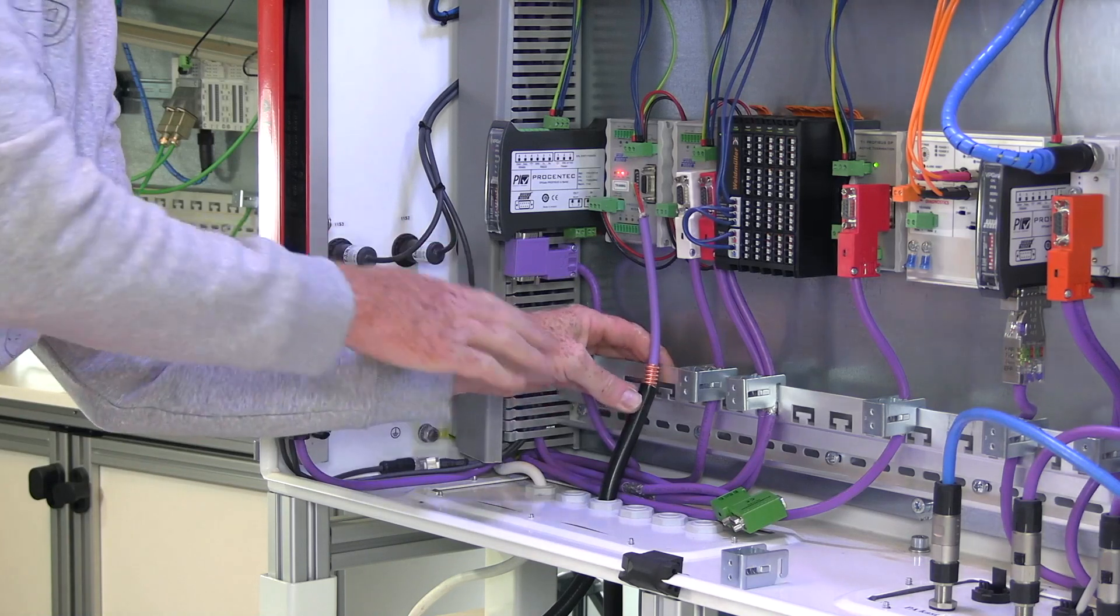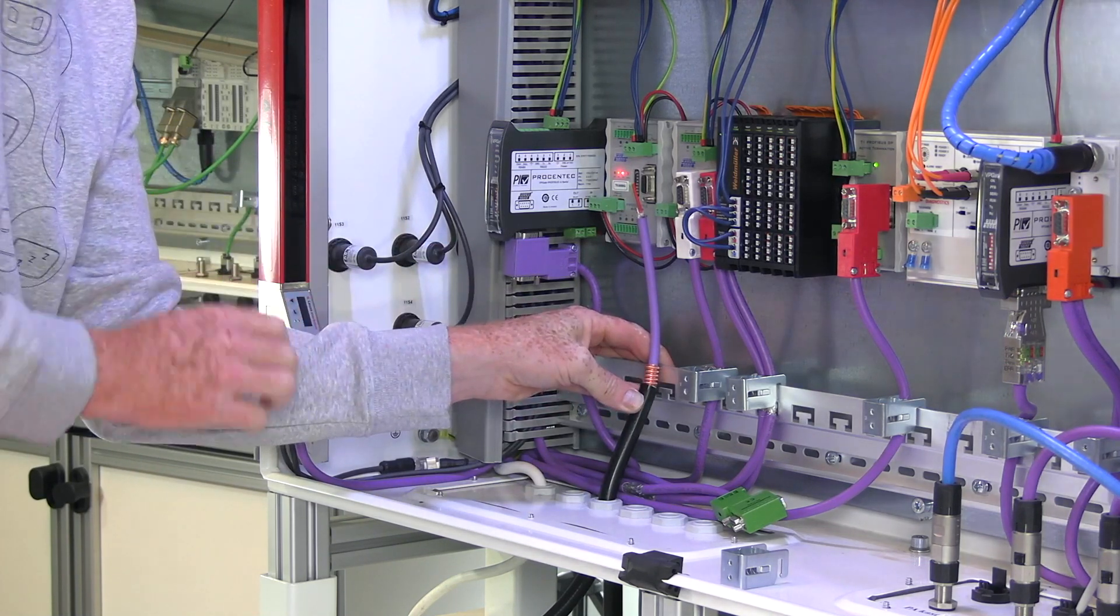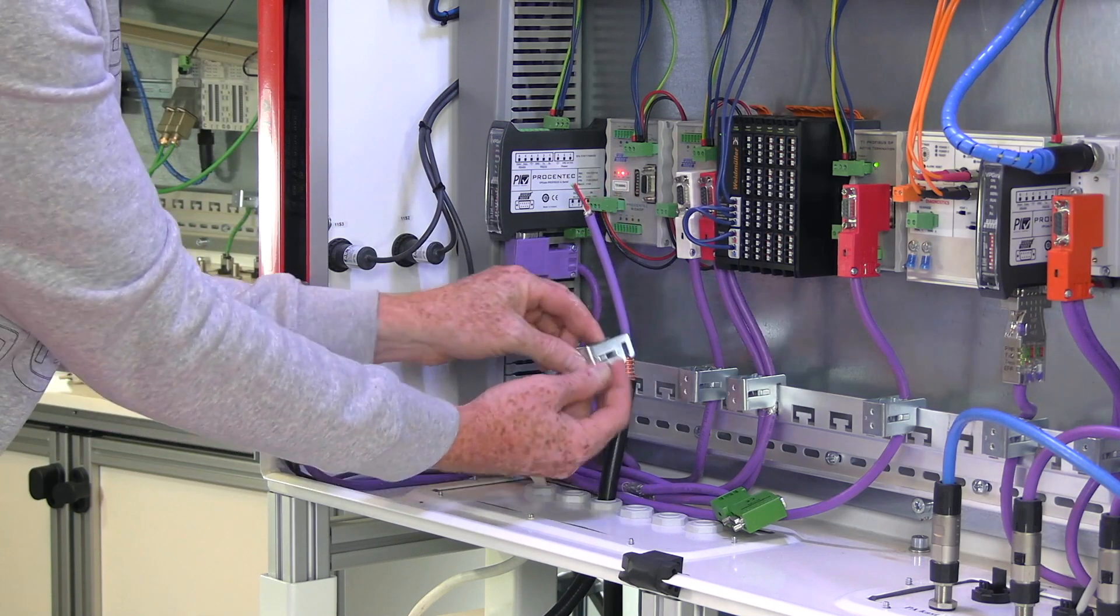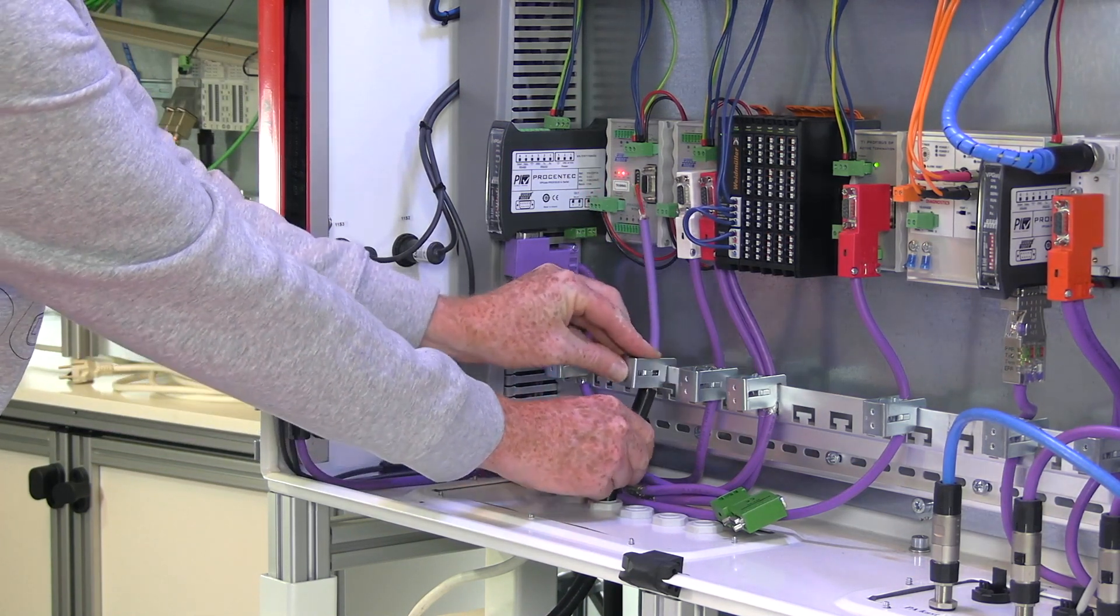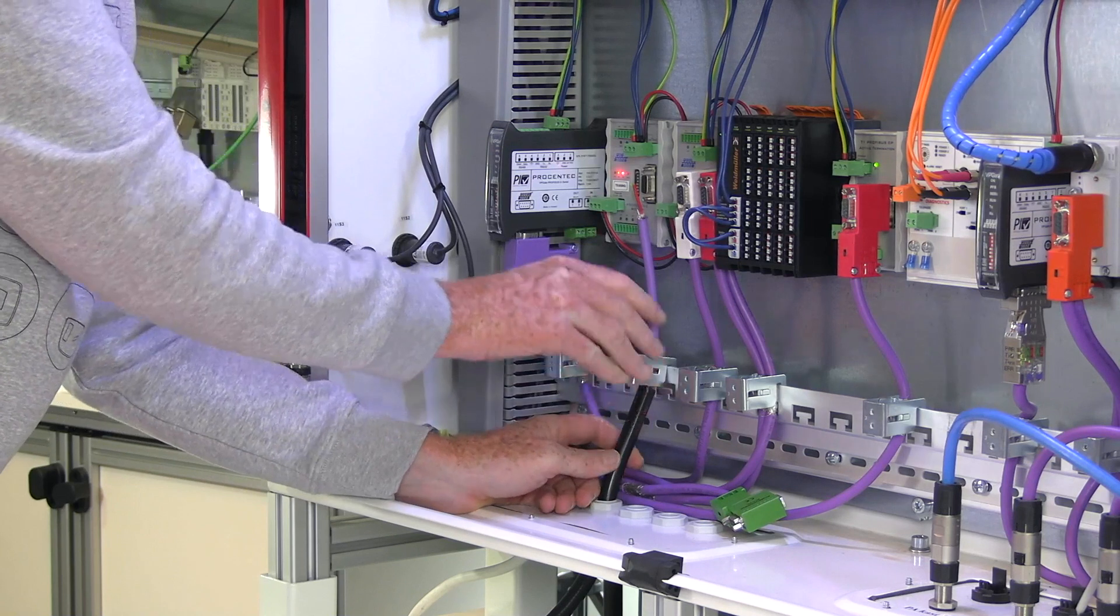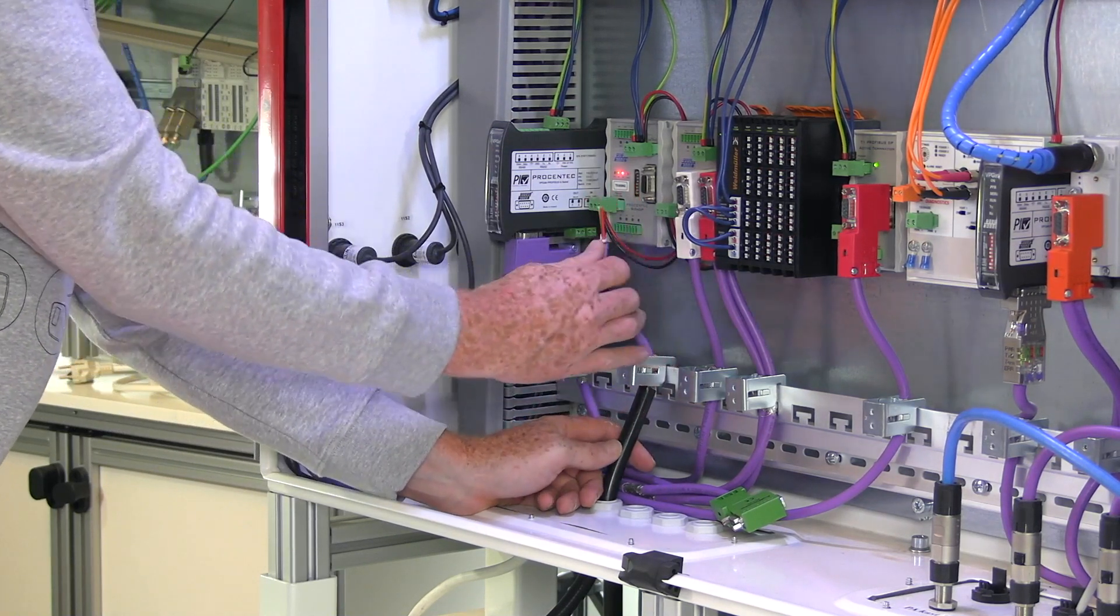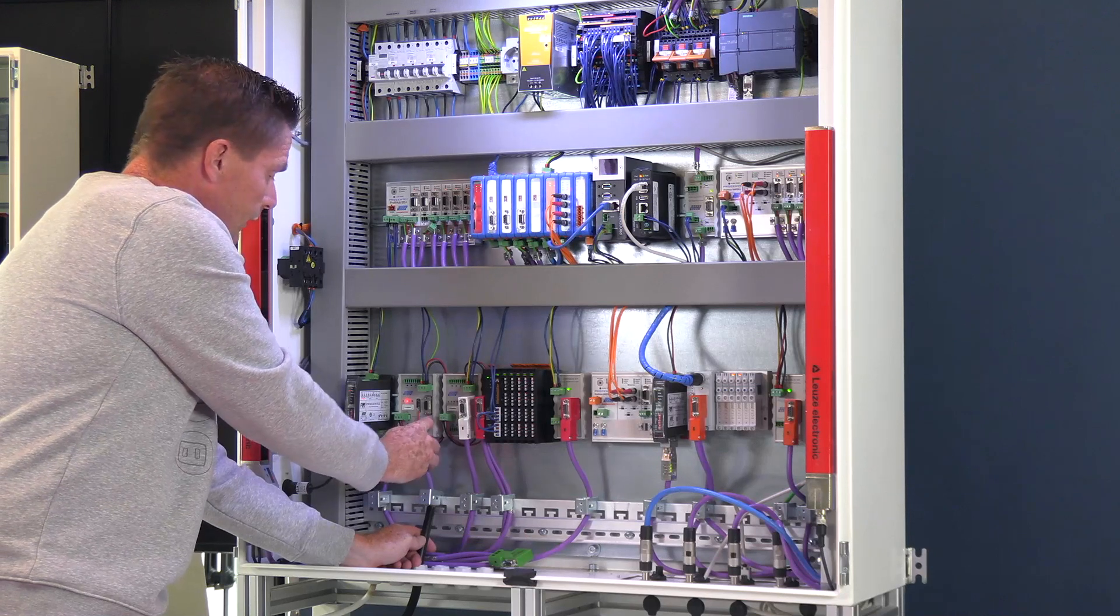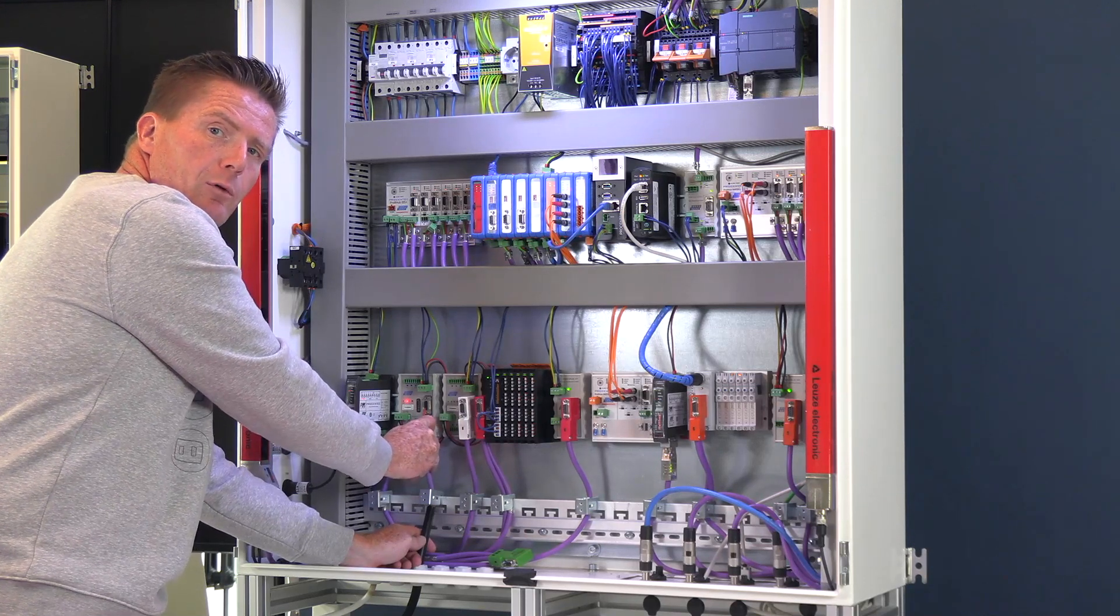So I'll place the copper against the ground rail, use my ground clip, place it over it. And now my EMC cable is connected to the ground rail. And I can connect my Profibus cable like we always do, with my extra shield of my Profibus cable for extra protection.